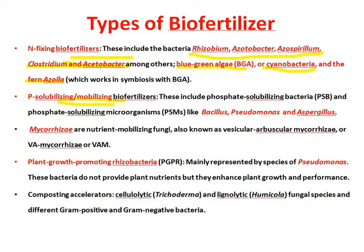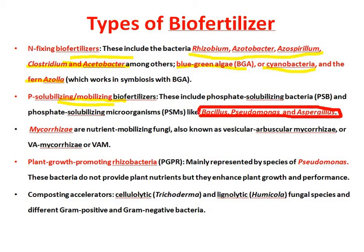For phosphorus solubilizing or mobilizing, the main microbes are Bacillus, Pseudomonas, and Aspergillus. They are referred to as PSP and PSM — Phosphorus Solubilizing and Mobilizing groups — and these microbes are responsible for that function.